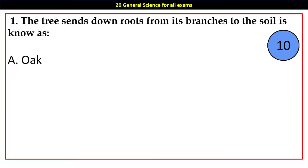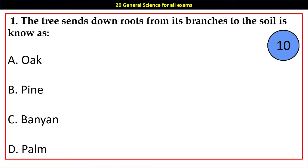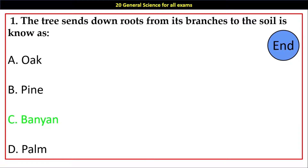Question number 1. The tree that sends down roots from its branches to the soil is known as: Options A. Oak, B. Pine, C. Banyan, D. Palm. Answer: C. Banyan.